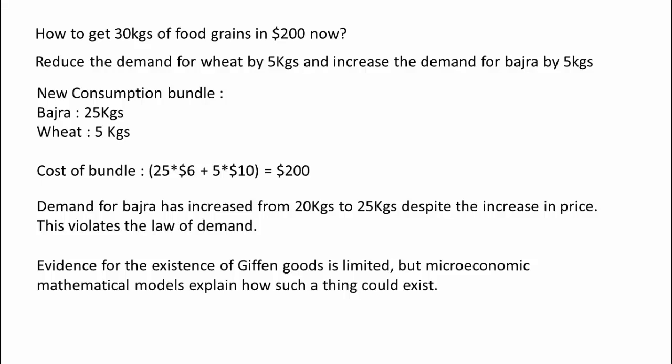So the demand for Bajra has increased from 20 kgs to 25 kgs, despite the increase in its price, and this violates the law of demand as well. Though we have just discussed an example of a Giffen good, evidence for the existence of Giffen goods is limited. But microeconomic mathematical models explain how such a thing could exist.